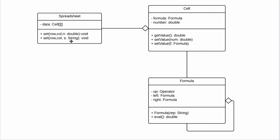A cell can either be a formula or a number. You'll need methods to get values from it and set the value of a cell. A formula, if you've done this before, is really just a binary tree — you have an operator, a left side, and a right-hand side, and the left and right sides are recursively formulas themselves.